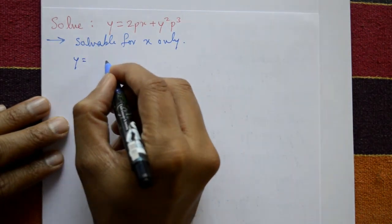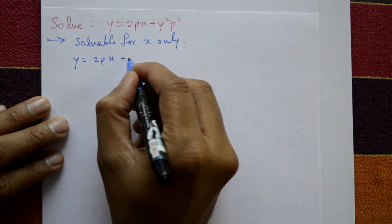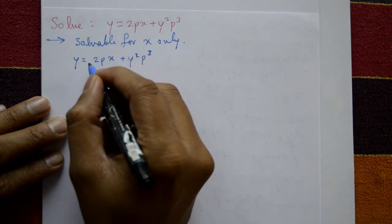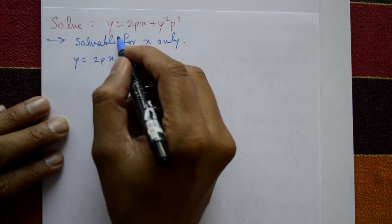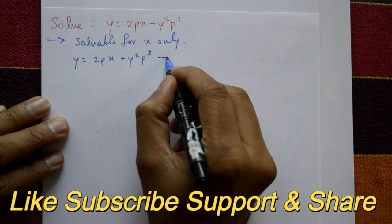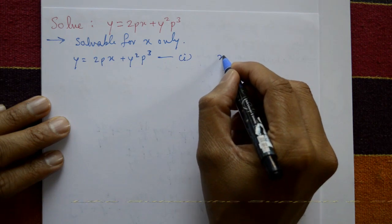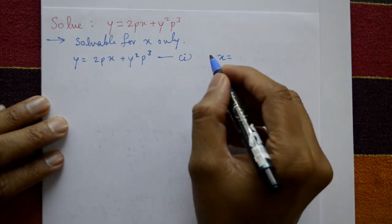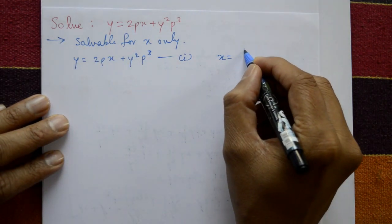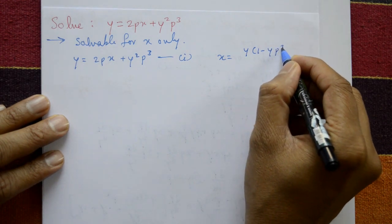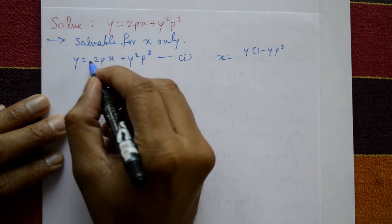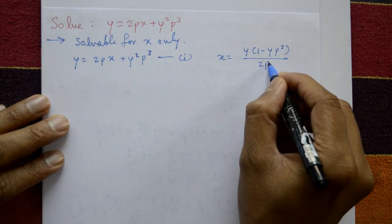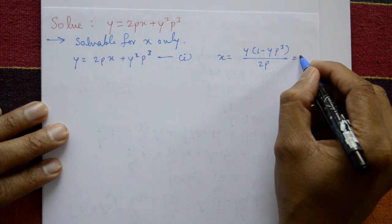Since it is solvable for x only, write equation number one: y = 2px + y²p³. Now express x: shift terms to the left-hand side, take y as common factor, giving x = y(1 - yp³) divided by 2p. This is x as a function of y and p.